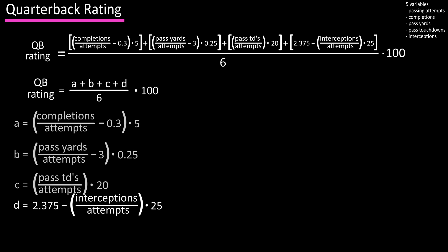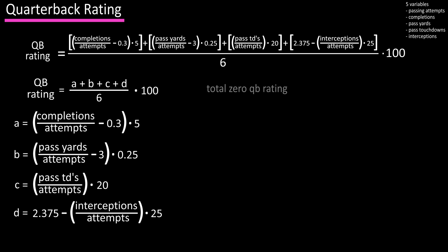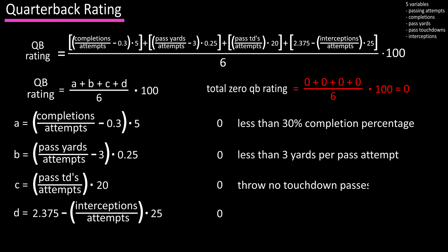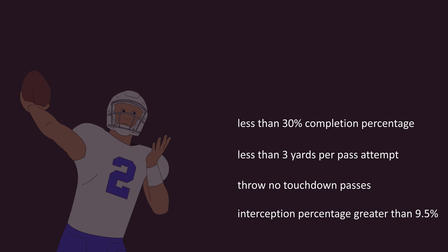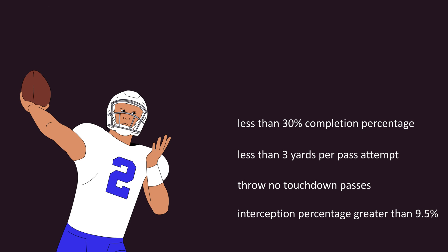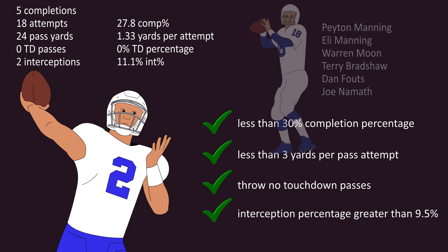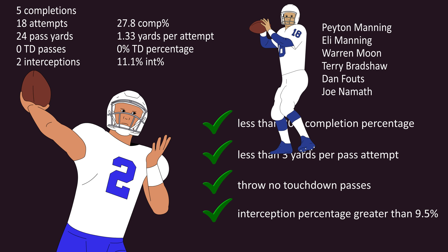Now let's look at the best and worst ratings a quarterback can have. To have a total rating of zero, a quarterback must achieve zero in all four equations — less than 30% completion percentage, less than three yards per attempt, no touchdowns, and an interception percentage above 9.5%. Nathan Peterman accomplished this in 2018, with five completions on 18 attempts for 24 yards, no touchdowns, and two interceptions. Some other notable quarterbacks have done this as well, as shown on screen.